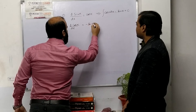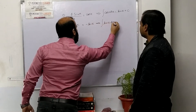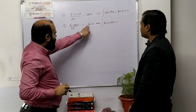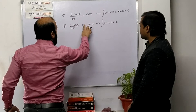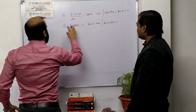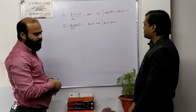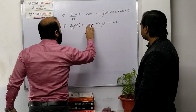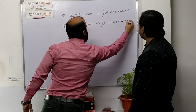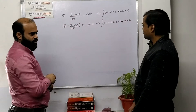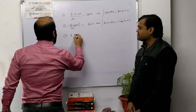Now tell me: if you know the differentiation of cos x, which is minus sin x, can you tell me what the integration of sin x is? The minus sign can be taken out as a constant and brought inside. So the integration of sin x is minus cos x plus constant of integration.